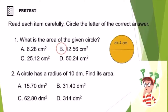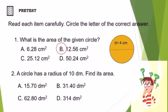Number 2. A circle has a radius of 10 decimeters. Find its area. A. 15 and 70 hundredths square centimeters? B. 31 and 40 hundredths square centimeters? C. 62 and 80 square centimeters? Or D. 314 square centimeters? The correct answer is letter D.